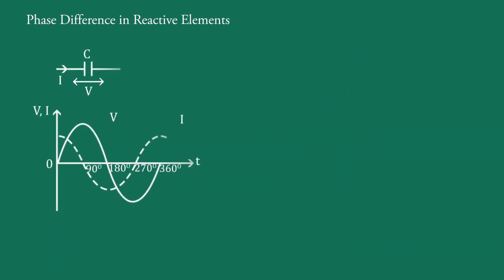Now suppose an alternating voltage is applied across a pure capacitance of C farads. The current through the capacitance is also alternating and sinusoidal in nature, of the same frequency as that of the applied voltage. But they are not in phase with each other. If the capacitance is pure, then this phase difference is 90 degrees.